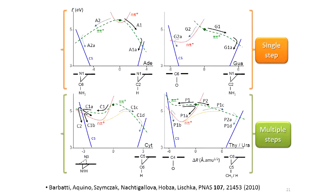You see, there's a big difference between the purine and pyrimidine. While the purine has a single and important reaction pathway, the pyrimidines have several different pathways, and that explains that observation, that experimental observation, that the purines have a single step while the pyrimidines have multiple steps.